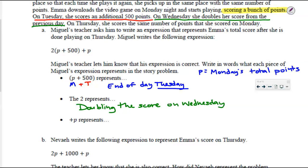What then does that plus p represent? I can see here's Monday's total, we added 500 points, that's the end of the day Tuesday. We doubled that because that's what happened on Wednesday. So what does that plus p represent? Ike. Exactly. Thursday she scores the same number of points that she scored on Monday. Do I know how many points she scored on Monday? No, but I know what we're using to represent it. Thursday's points were the same as Monday's.